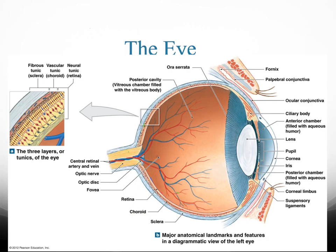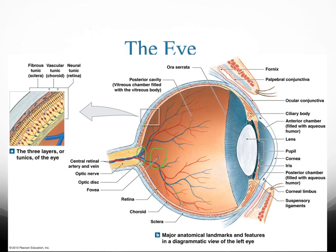Another structure to discuss is your fovea. The fovea is the area where you're going to have the highest concentration of cones. Cones are the structures that allow us to see things in color. If we compare the fovea to your optic disc, the optic disc is going to have zero percent — no cones, which detect color, or rods, which detect black and white. So the optic disc is also known as your blind spot.